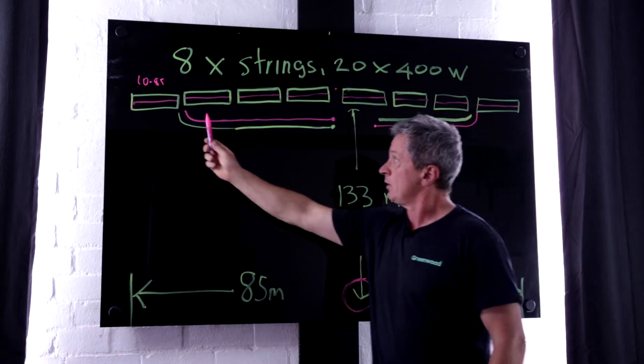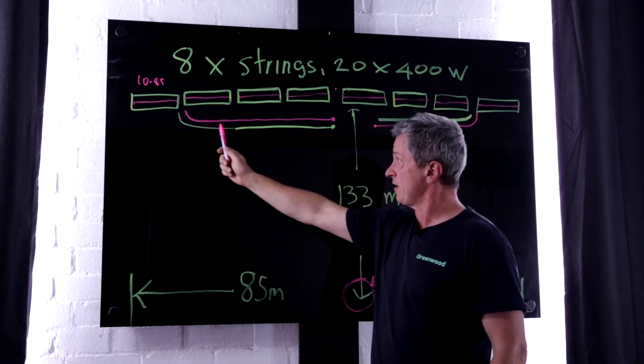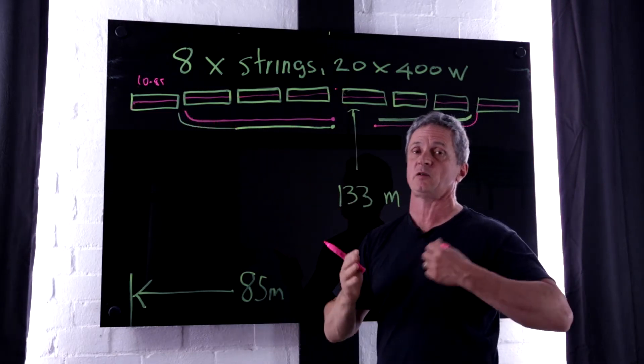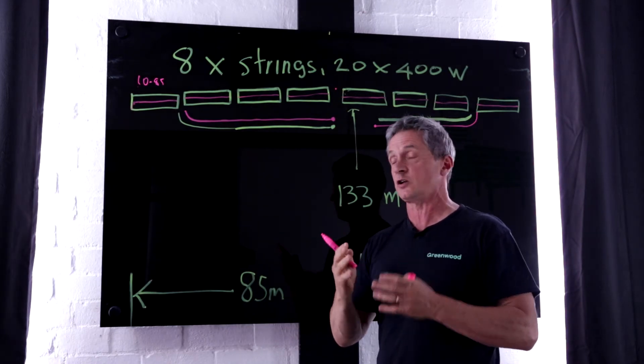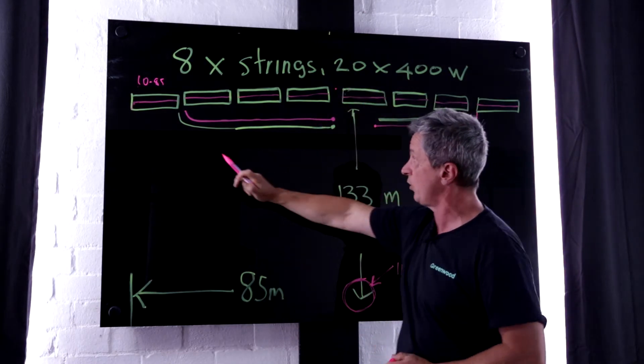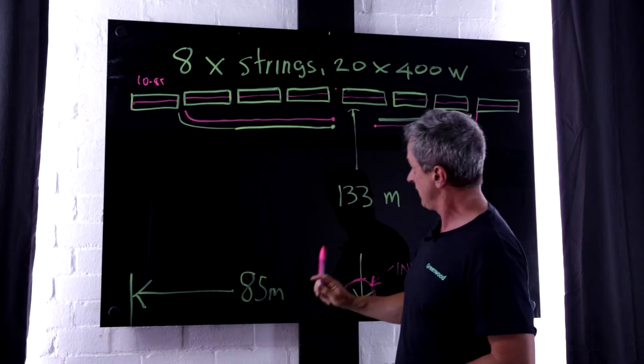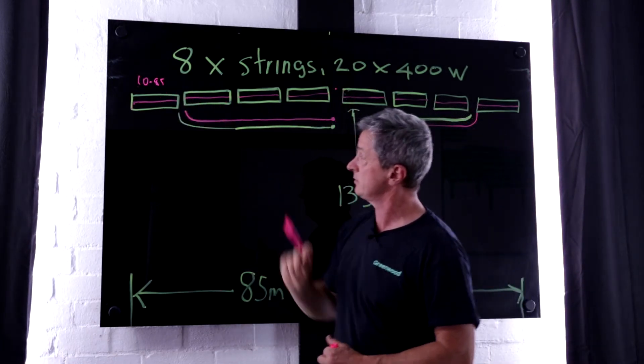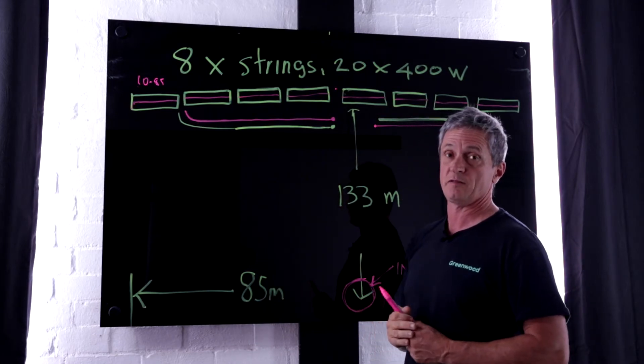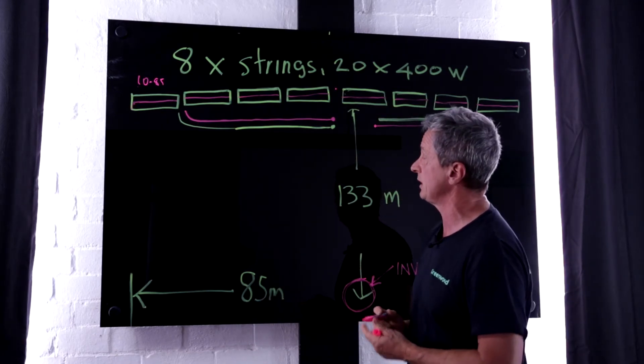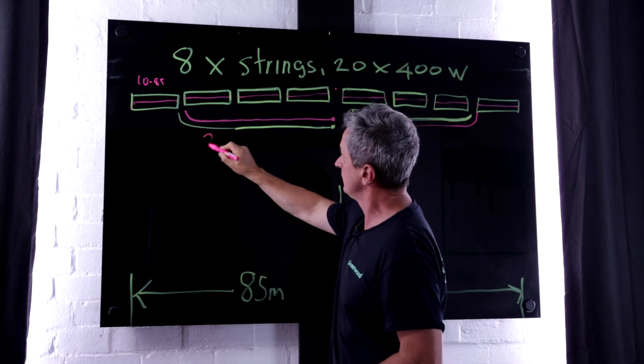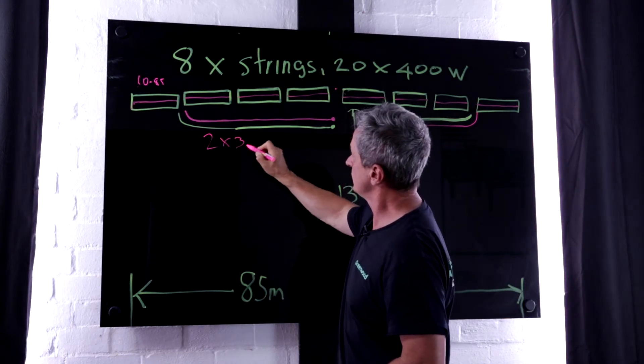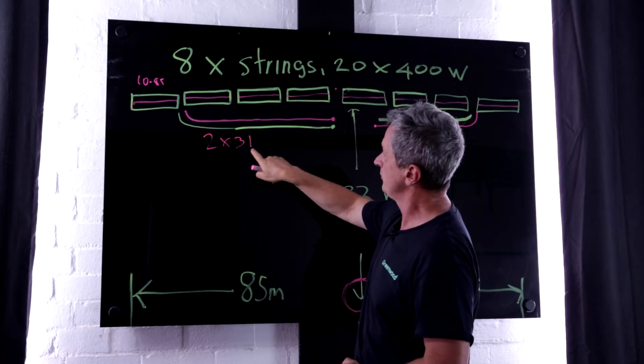So this run here, positive, negative, take into consideration, no bends and curves when it gets to this central point, is 42 metres minus 10.85. So it's about 31 metres approximately. So we have two cables, 31 metres.